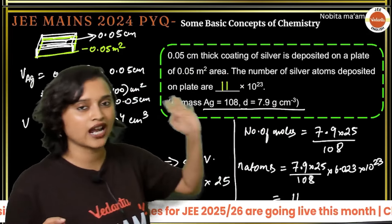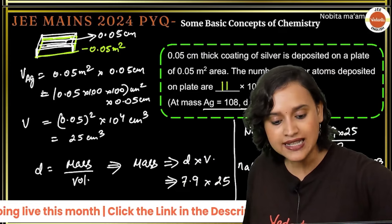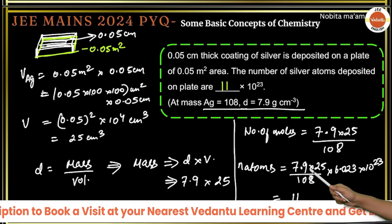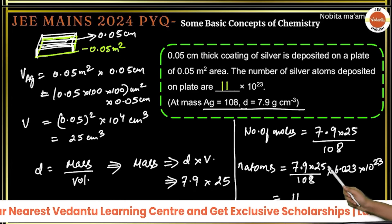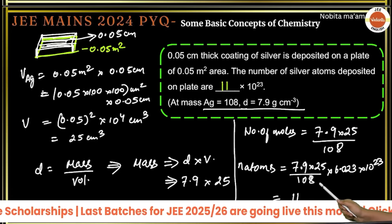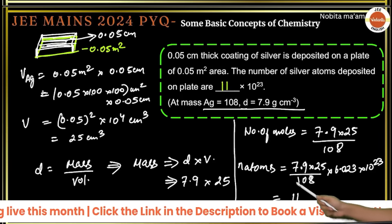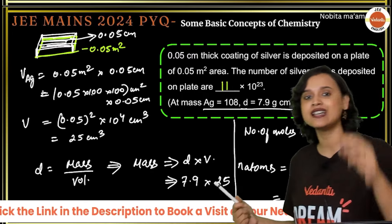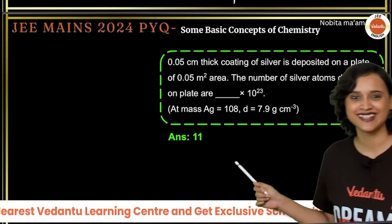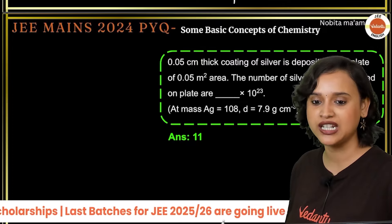The answer is 11 × 10²³. I still suggest you go and calculate it on your own one more time. Moving on to the next question: the number of moles of methane required to produce 22 grams of CO₂ after combustion is x × 10⁻² moles. What is the value of x?